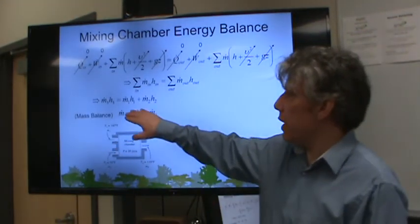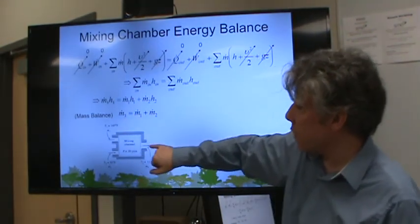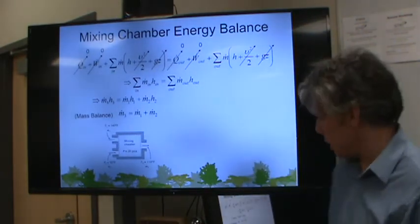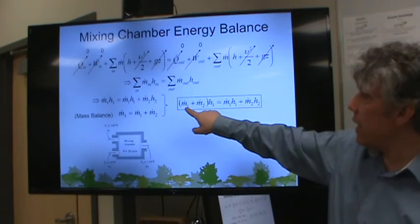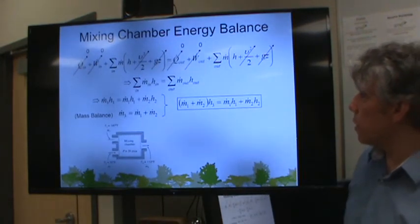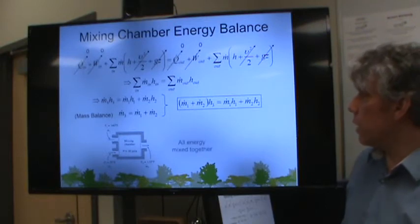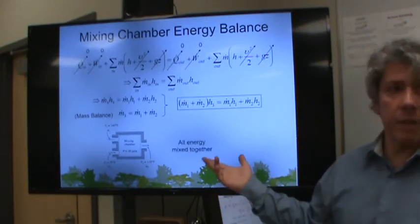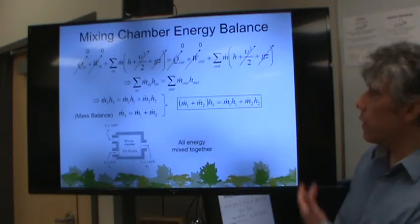So if we have two entrances and one exit, which is the common mixing chamber, then we can represent the fluid power leaving as the sum of the two fluid power streams entering. Now, from a mass balance, notice this is an energy balance, but from a mass balance, if we're in a steady state, the mass flow rate out equals the sum of the mass flow rates in. And so we can make a substitution for the mass flow rate leaving based on the incoming mass flow rates alone. And here's our energy balance for mixing chamber. And really all that the mixing chamber does is mix all the energy together.